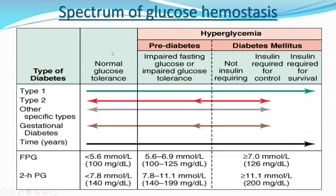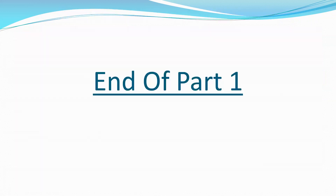If you discover a patient with pre-diabetes, you can revert their blood glucose to normal. Once a patient fulfills the diagnostic criteria for diabetes, all you can do is control blood glucose with insulin or drugs. This concludes part one. In the next part, we will speak in more detail about type 1 and type 2 diabetes.